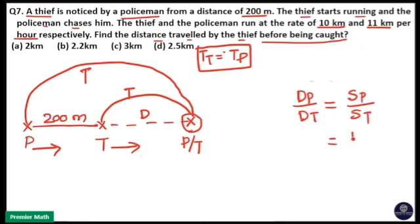Here you already know speed of police is 11 kilometer per hour and speed of thief is 10 kilometer per hour. That means distance taken by police divided by distance taken by thief is same as 11 by 10. Here difference between 11 part and 10 part is one part. And difference between distance taken by police and distance taken by thief is 200 meter.